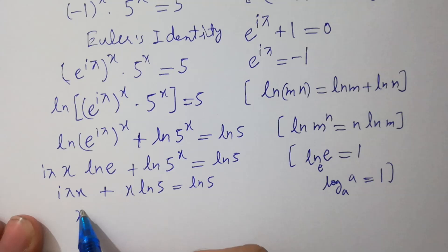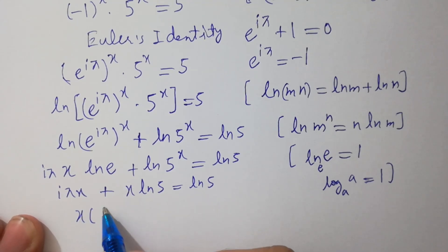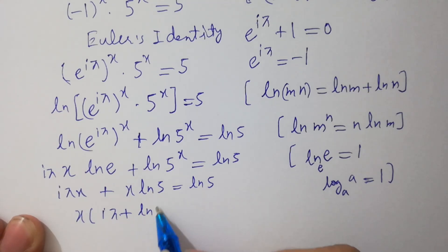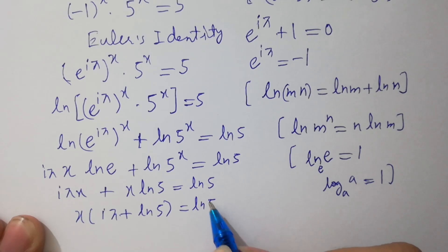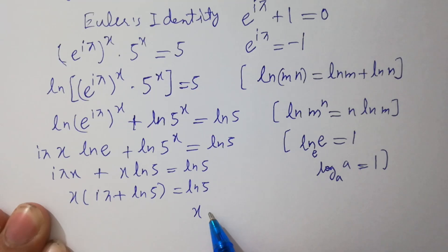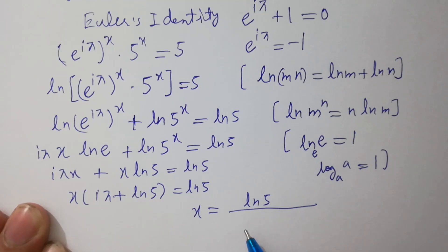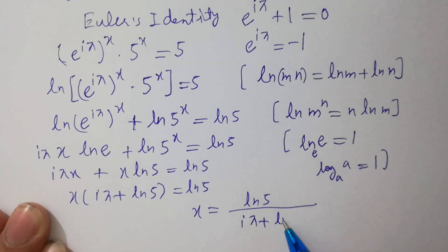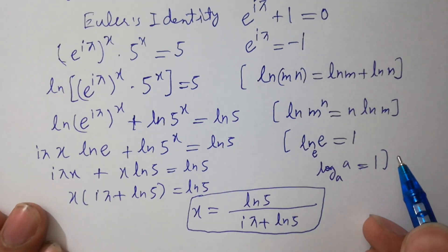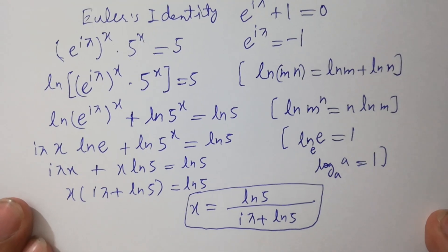So, x is common. We have x times (i pi plus ln 5) equals ln 5. Therefore, x equals ln 5 over (i pi plus ln 5), which is the correct answer by Method 2, natural logarithms. Thanks for watching this video.